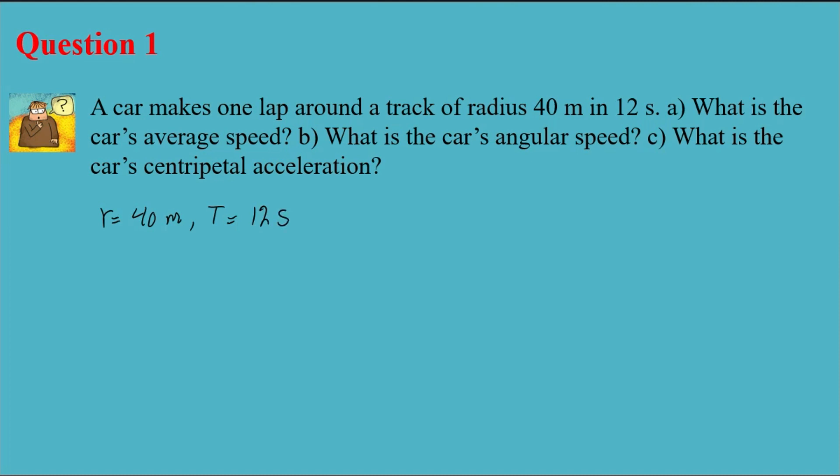I need to find the average speed and we know that average speed is equal to 2πr over T. So it's gonna be 2 times π, which is 3.14, times R which is 40, and then T is 12 seconds. If I do the simple math, my answer is 20.93 meters per second. That's my final answer for part A.